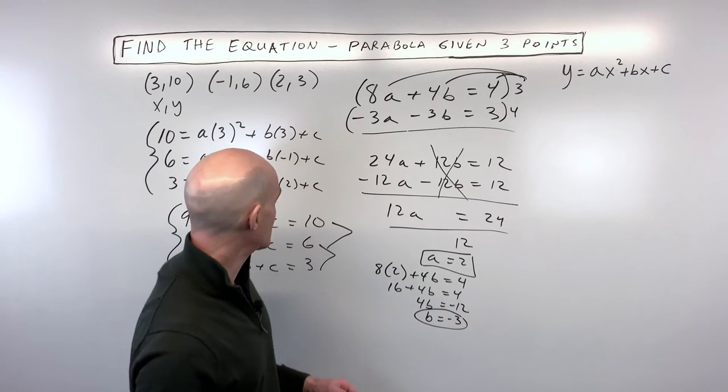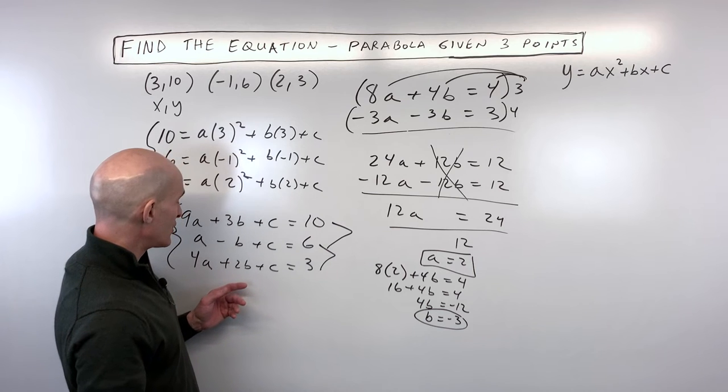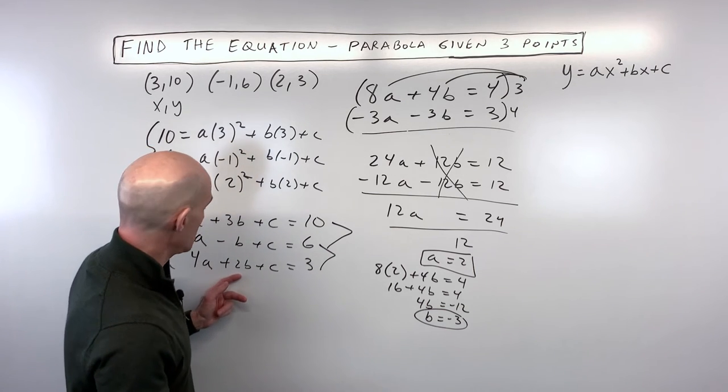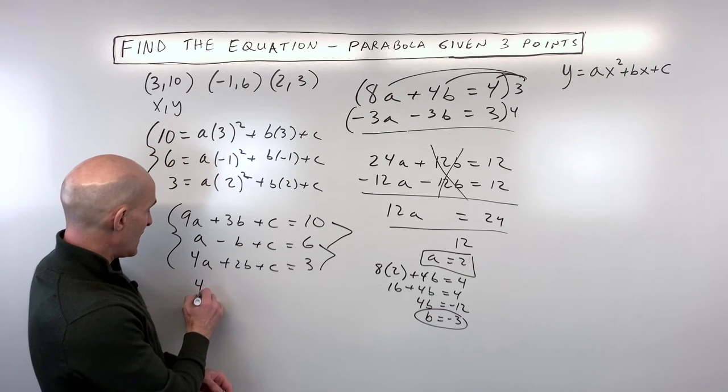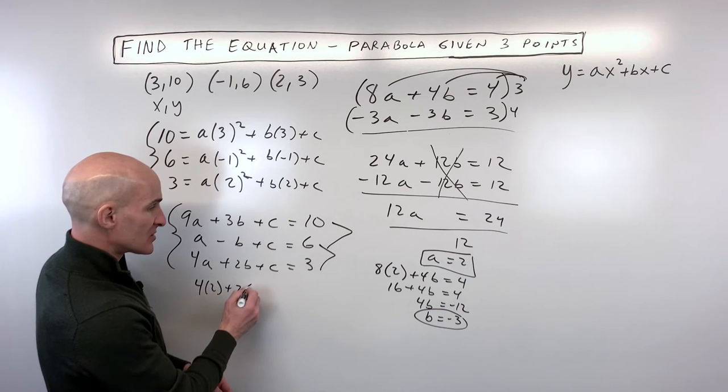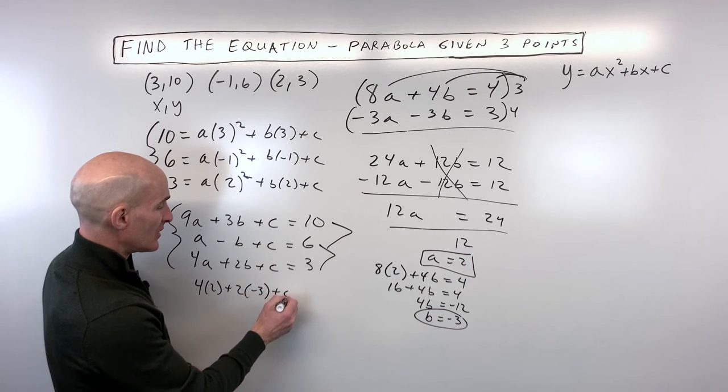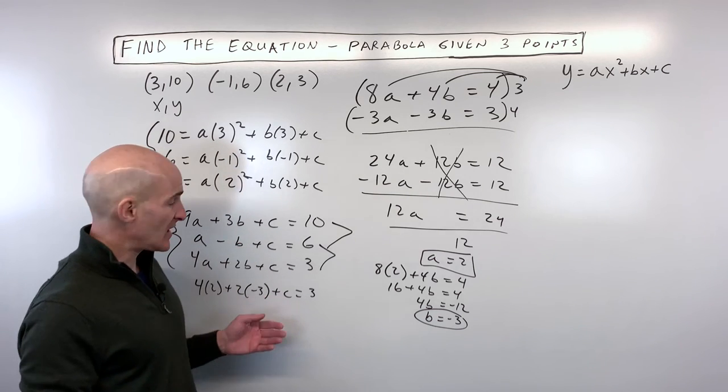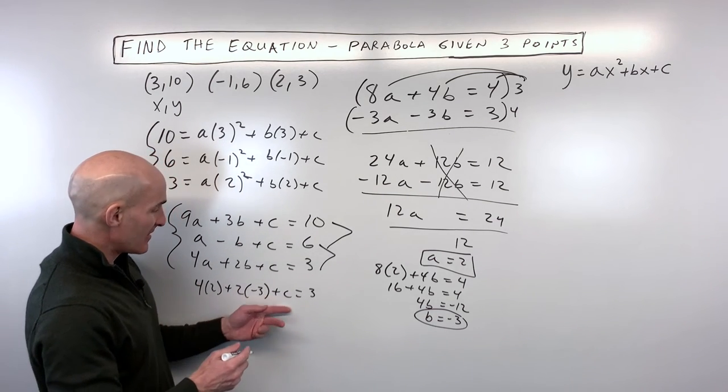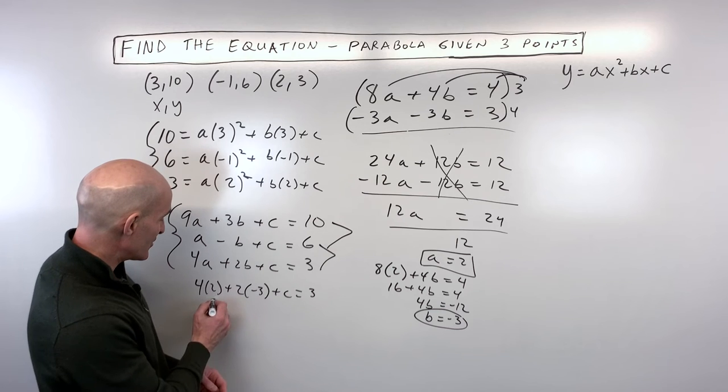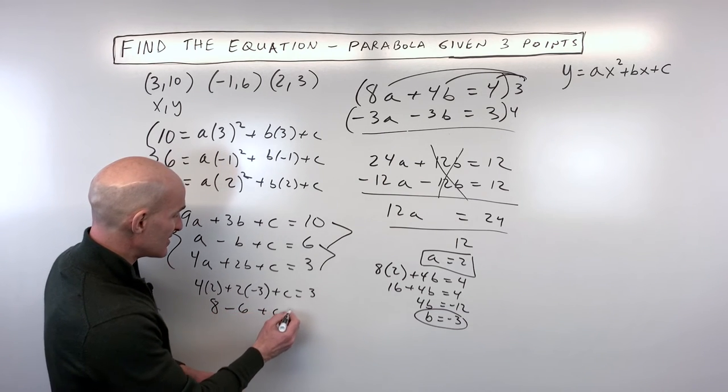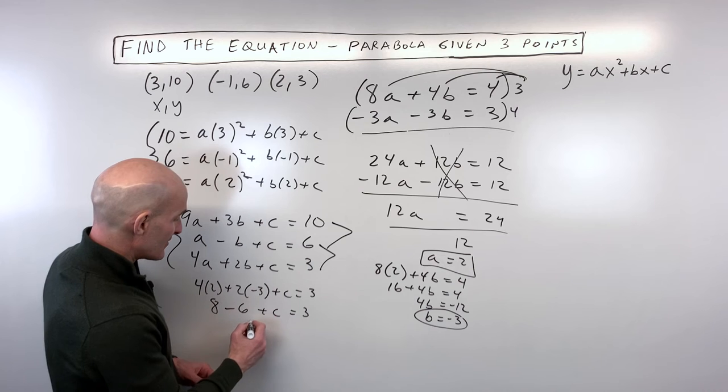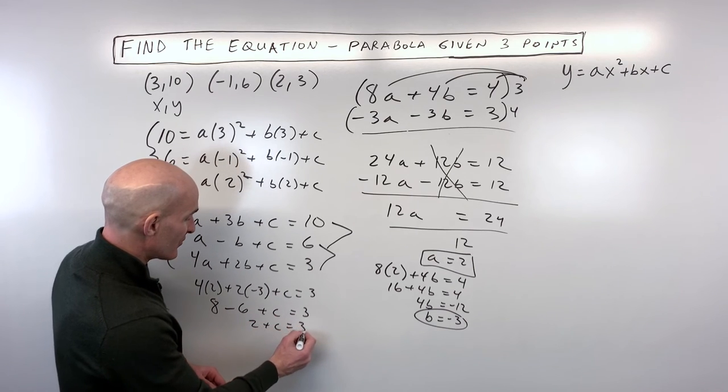Now we just need to solve for c. I think I'm going to use this bottom equation here. So we have 4 times a, which is 2, plus 2 times b, which is negative 3, plus c equals 3. Now I could have put it into the first or second equation. I just picked this third one because I have some space here to write.